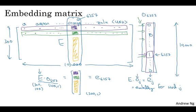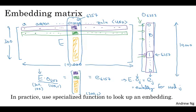Now, just one note, when we're writing out equations, it would be convenient to write this type of notation where you take the matrix E and multiply it by the one hot vector O. But when you're implementing this, it is not efficient to actually implement this as a matrix vector multiplication because the one hot vectors, this is a relatively high dimensional vector, and most of its elements are zero. So it's actually not efficient to use a matrix vector multiplication to implement this because you'd be multiplying a whole bunch of things by zeros. And so in practice, you'd actually use a specialized function to just look up a column of the matrix E rather than do this with a matrix multiplication.